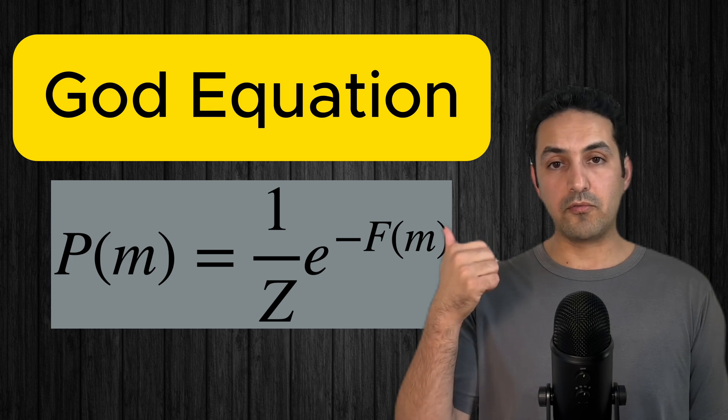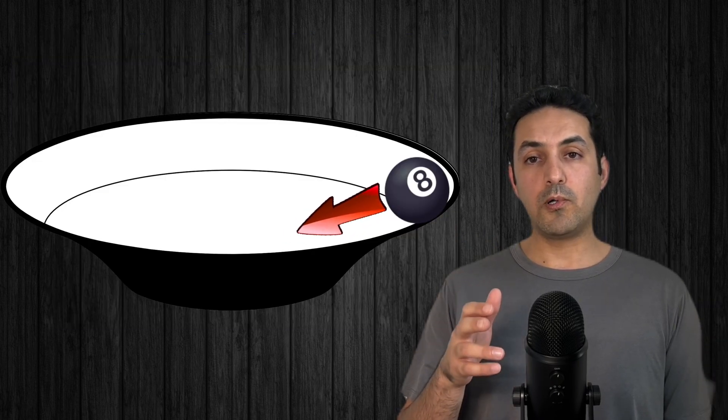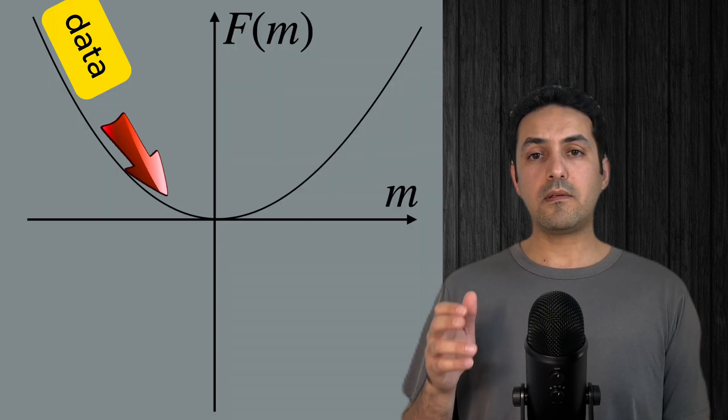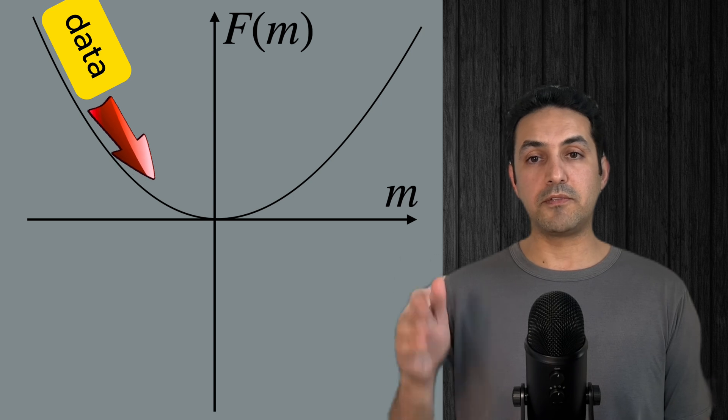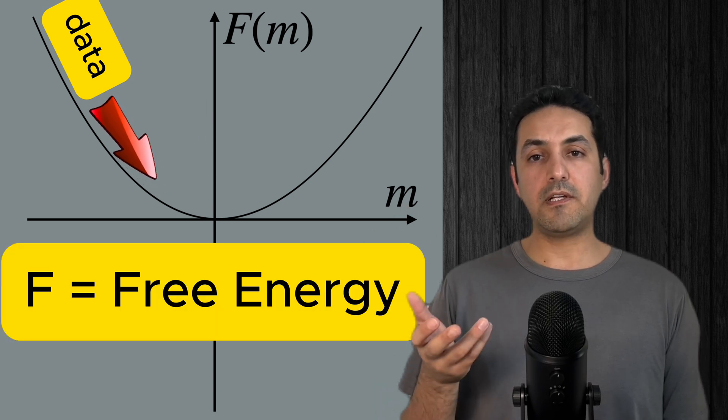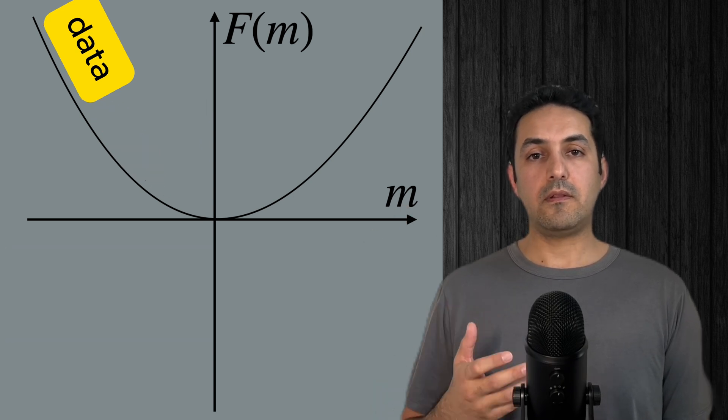The columns in my spreadsheet obey a certain probability distribution of the following form, which I like to call the God equation. Just like a ball inside a bowl that rolls toward the bottom of the bowl under gravity, the data in the spreadsheet will roll toward the minimum of this F, which acts effectively as the free energy of the system.